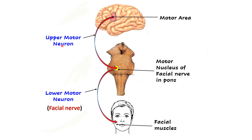Upper motor neurons are located in the upper parts of the central nervous system — specifically in the motor area of the cerebral cortex. Lower motor neurons, for cranial nerves, have their cell bodies in motor nuclei located in the midbrain, pons, or medulla. For the facial nerve, the motor nucleus is located in the pons.